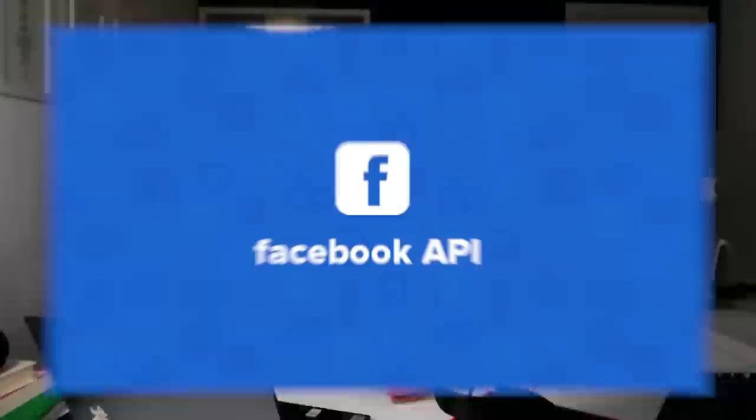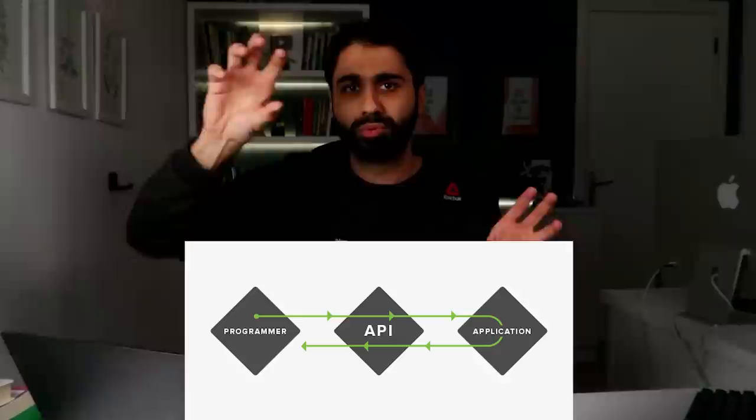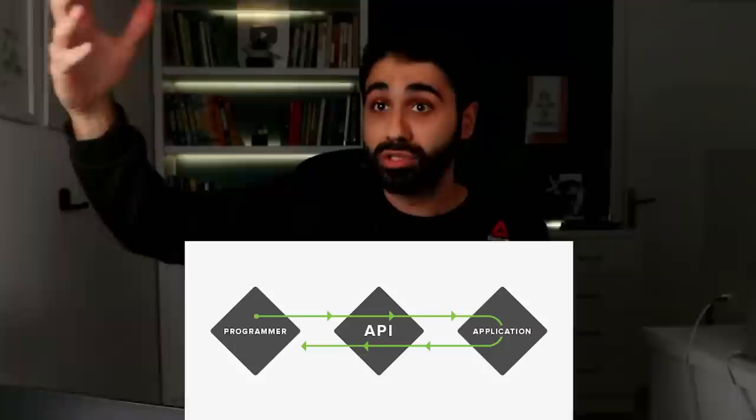A simple example: if you want to publish a post on Facebook, you just open your mobile phone or browser and publish using the Facebook interface. But if you're a developer and want to access Facebook within your own application with your own code, you need to use the Facebook API. Simply put, an API is like a broker — a middleman between you, the developer, and a service like Facebook.